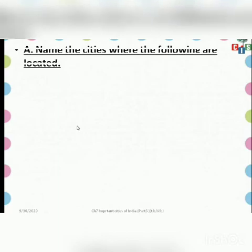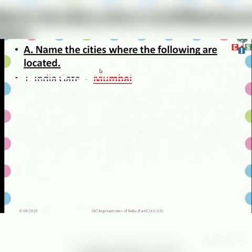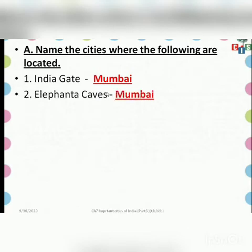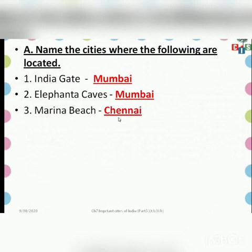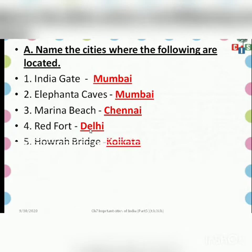Children, at the end of the explanation of the chapter there are textual exercises. The first question is: name the cities where the following are located. India Gate is located in Delhi. Elephanta Caves are also located in Mumbai. Marina Beach is located in Chennai — it is the longest beach of India. Red Fort is situated in Delhi, and Howrah Bridge is located in Kolkata.